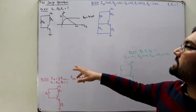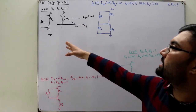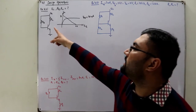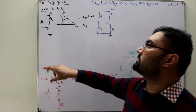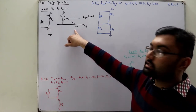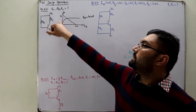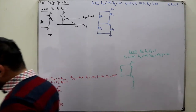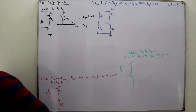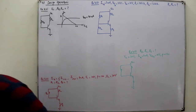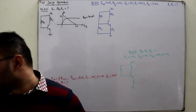The first question states: given the fixed bias configuration with given characteristics, find the value of the resistances. From here you could see that VCC is given and IC is given. So if IC and VCC are given, you can find RC. RC would be VCC divided by IC.